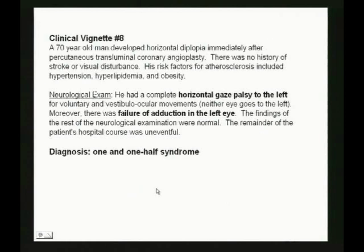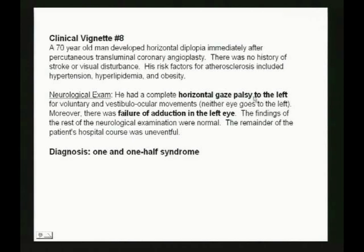Moving on to clinical vignette eight — one-and-a-half syndrome. This is something you haven't had in class but will likely see on national boards. This patient can't move their eyes to the left at all — neither the left eye nor the right eye. They also can't get the left eye to go right. This is called one-and-a-half syndrome. Let me show you what it's about — here's the abducens nucleus.